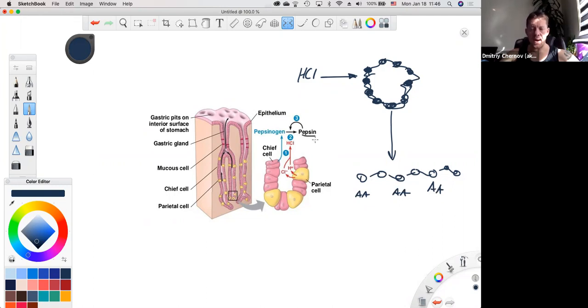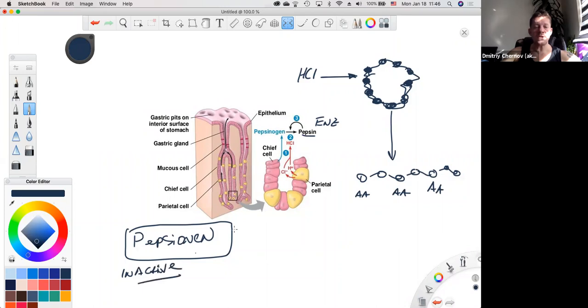Then we also have an enzyme pepsin. The enzyme pepsin is the active form. Pepsin is an enzyme and pepsin is a protein. Let's pretend that I'm going to skip a lot of steps. So let's say pepsinogen is the inactive form of pepsin. With the help of hydrochloric acid, hydrochloric acid acts on pepsinogen and pepsinogen is being converted into active form called pepsin.